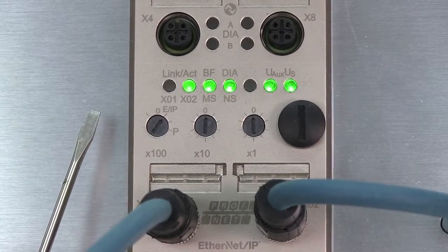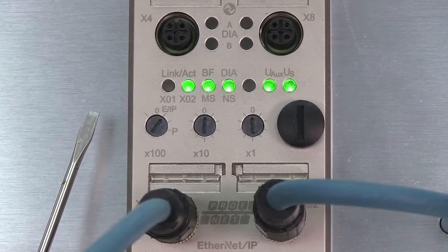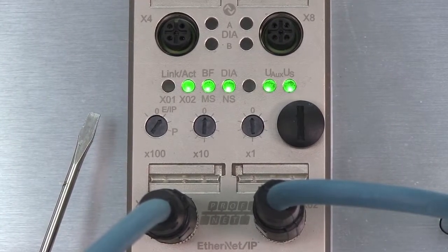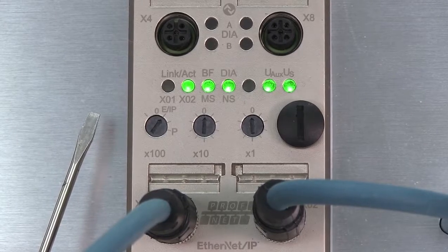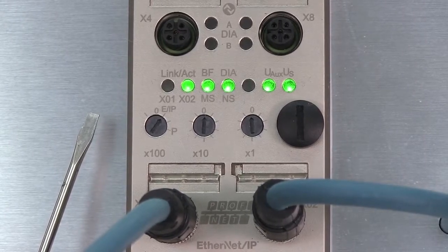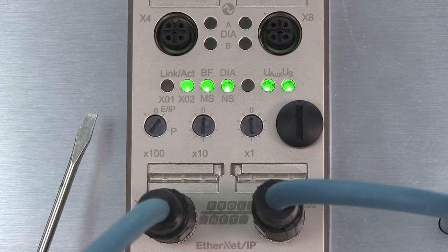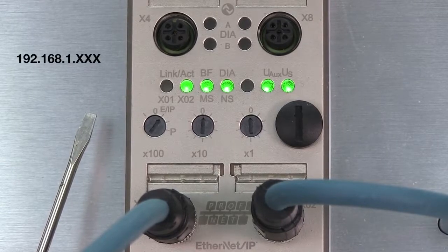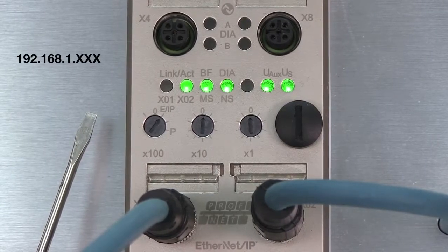The three rotary switches also are used to set the last octet of the IP address. On a new module, the default setting for the first three octets of the IP address is 192.168.1.